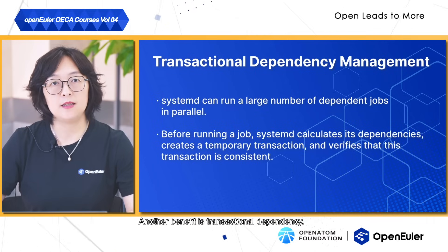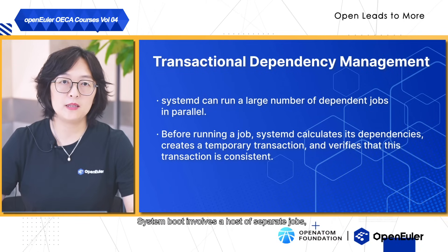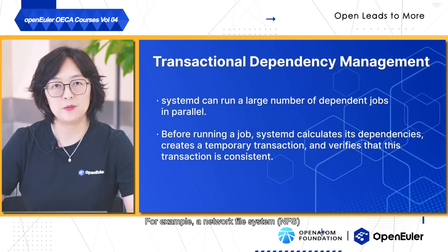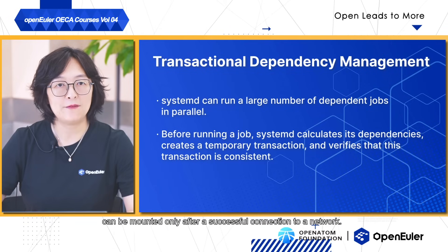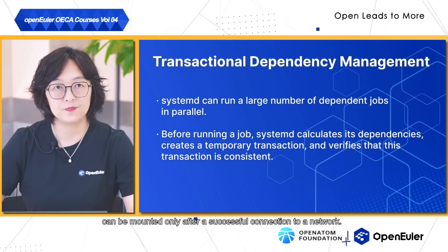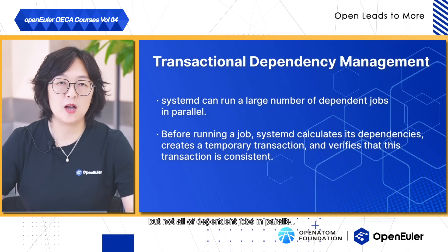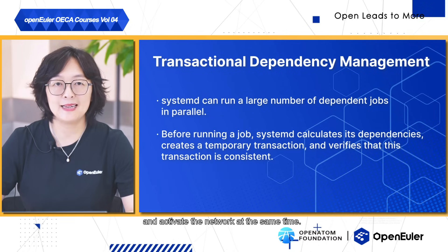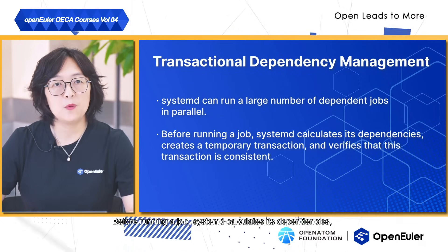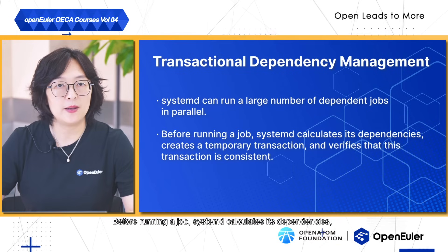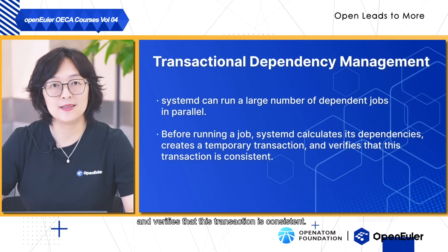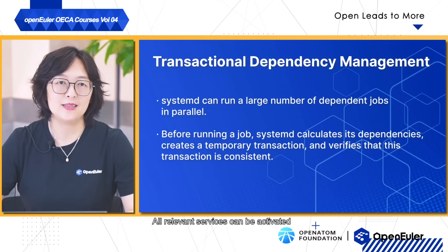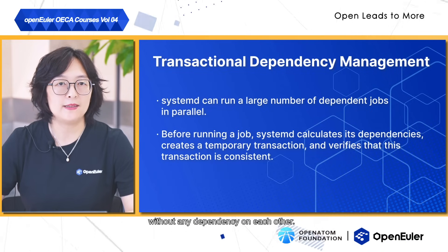Another benefit is transactional dependency. System boot involves many separate jobs, some dependent on each other — for example, a network file system can be mounted only after a successful network connection. System-D can run a large number of dependent jobs in parallel. Before running a job, System-D calculates its dependencies, creates a temporary transaction, and verifies that the transaction is consistent.